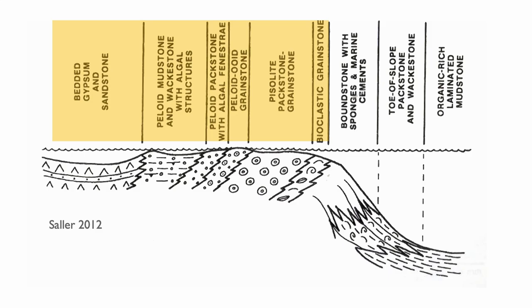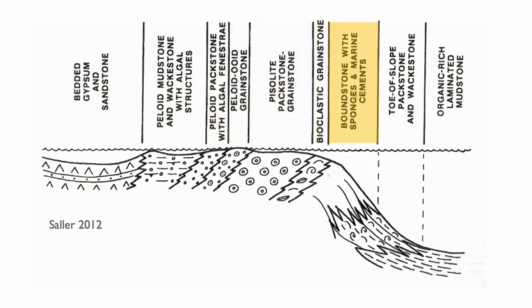If you look at a depositional model for this system, we went from evaporitic gypsum and sandstone, to peloidal mudstone and wackestone, to grainy deposits with pisolite packstone and tipi structures, and now we are in bioclastic grainstone — all very shallow. You might wonder where the reef is. What's really important to realize is that in this system, the reef is actually deeper than the rest of the sediment. It's not a shallow reef. Those large benthic foraminifers are the shallowest part of the system, where you would expect a reef in the modern world.